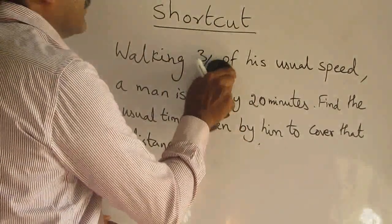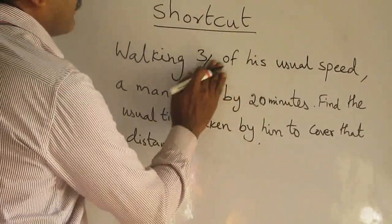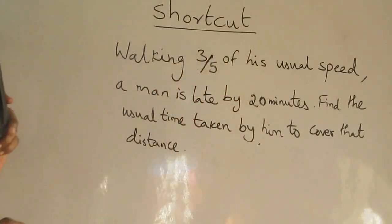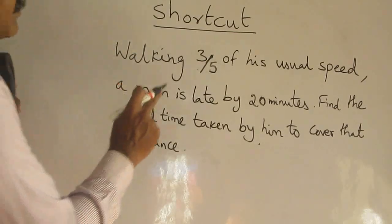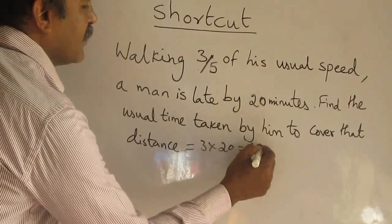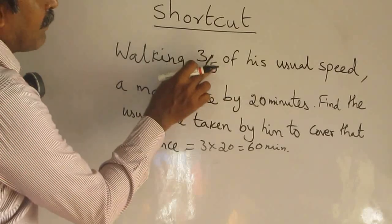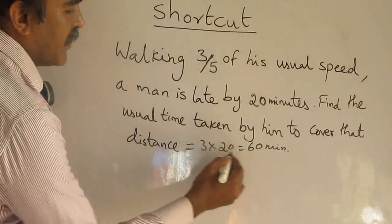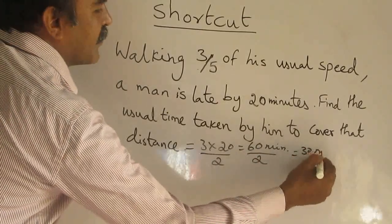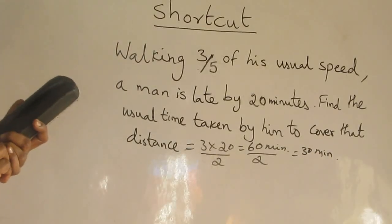What happens if I increase the denominator? Now let me change the question: walking 3/5 of the usual speed, late by 20 minutes. The same technique gives 3 times 20 = 60 minutes, but that won't be the right answer because the gap here is 2 (5 minus 3 = 2). So you have to divide by that 2. The answer is 30 minutes. I hope you enjoyed this video. Kindly remember to subscribe. Thank you.